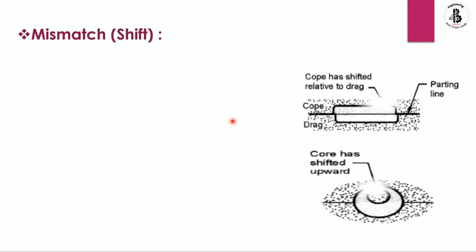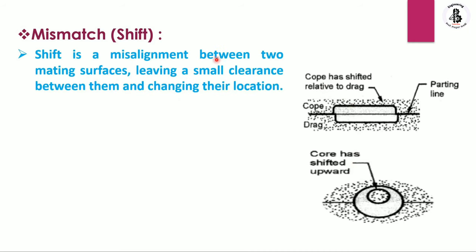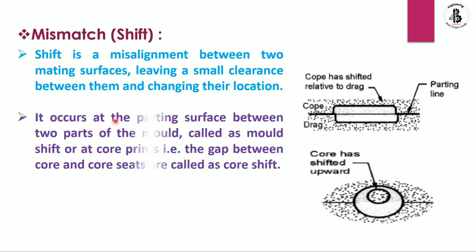Next is mismatch, also called shift. This is improper alignment between the cope part and the drag part around the parting line — the cope has shifted relative to the drag, generating defects. Shift is a misalignment between the two mating surfaces, leaving a small clearance between them and changing their locations. It occurs at the parting surface between the two parts of the mold — called mold shift — or at a core print, meaning a gap between the core and core seats.